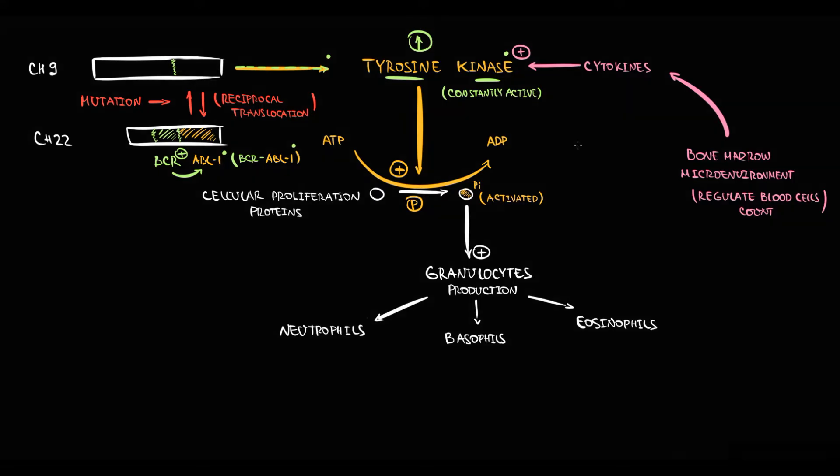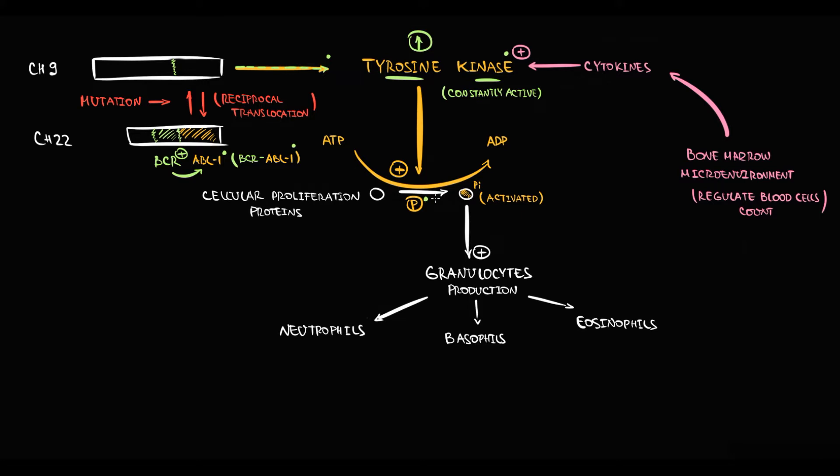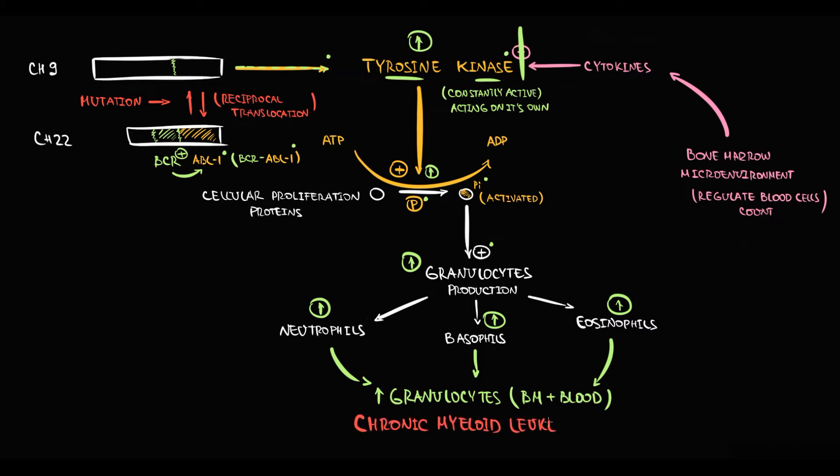With increasing activity of tyrosine kinase, phosphorylation and thereby activation of proteins that are responsible for cell proliferation increase. Thereby granulocyte production increases. As a result of this mutation, the amount of neutrophils, basophils and eosinophils in the blood begins to progressively increase. Exactly this overproduction with progressive accumulation of granulocytes in the blood is called chronic myeloid leukemia. And chromosome 22 that is formed by pathological reciprocal translocation with BCR-ABL1 gene is called the Philadelphia chromosome.